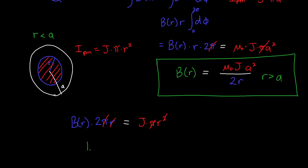And so we're left with B as a function of r being equal to mu naught j times r divided by 2. So this is for r less than or equal to a. And this is a very different answer.